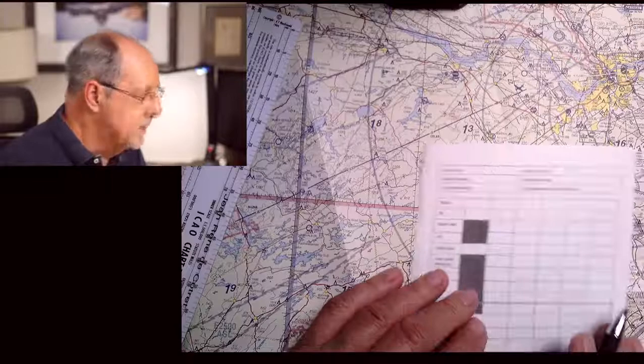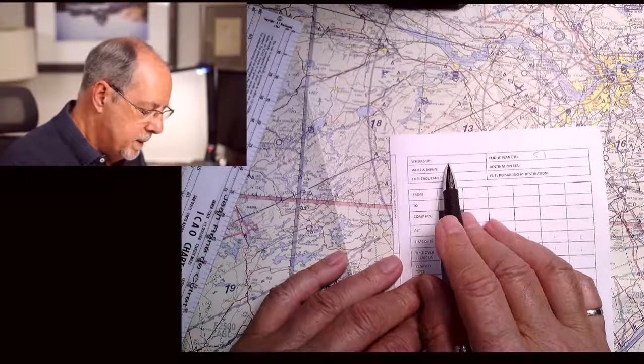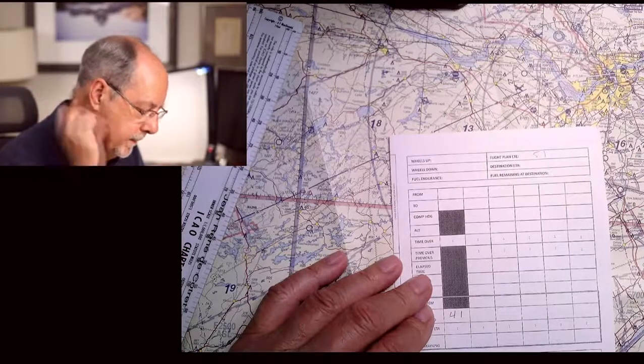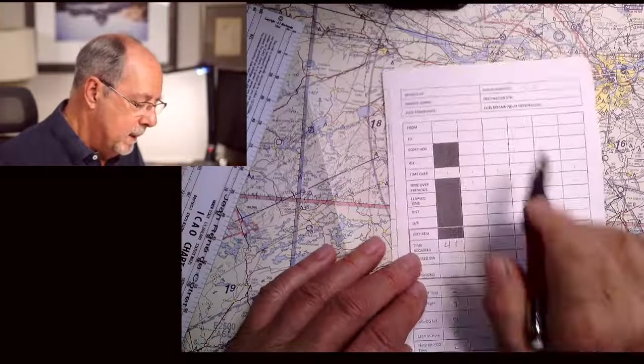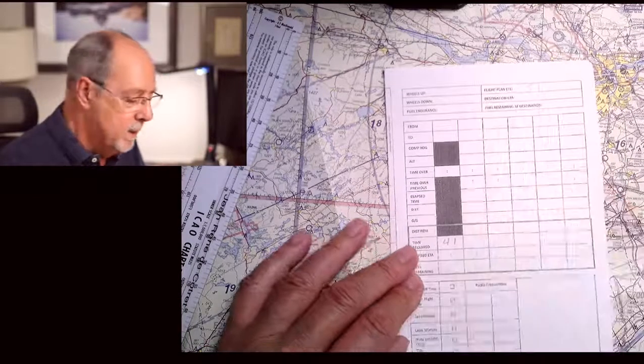So you can see using this form, if I write my wheels up time here, I would add 51 minutes and that gives me my destination ETA. ETE being estimated time en route and ETA being estimated time of arrival.